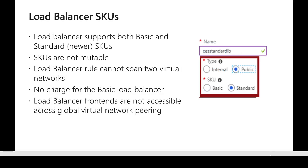There are different SKUs available with the load balancer: Basic and Standard. Once you choose a SKU you won't be able to change it later. Each load balancer should be within one virtual network, and if you want to load balance across VMs in two different availability sets you must use the Standard SKU. Basic is free of charge by default, but Standard comes with a fee.